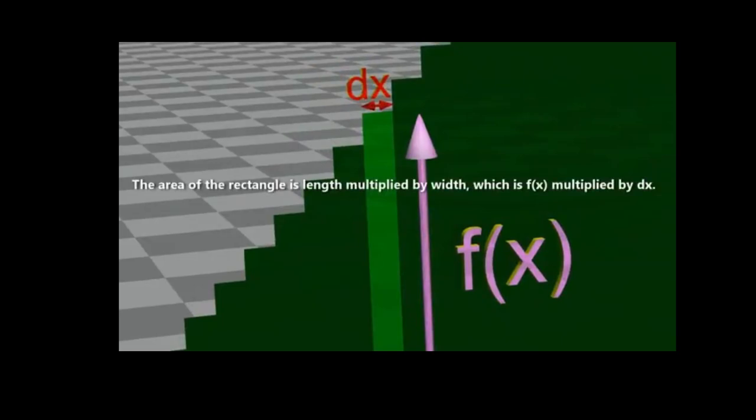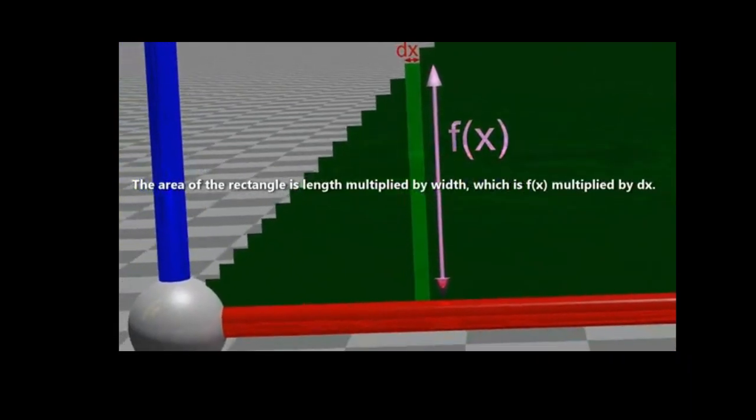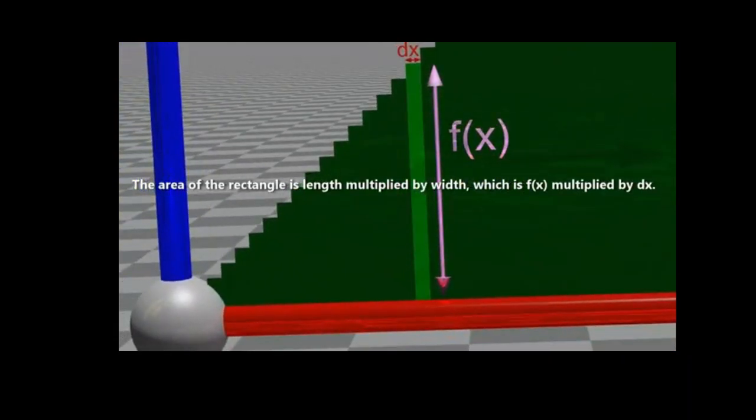The area of the rectangle is length multiplied by width, which is f of x multiplied by dx.